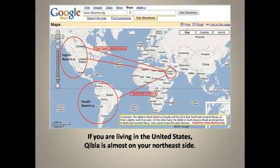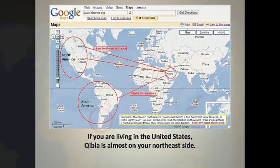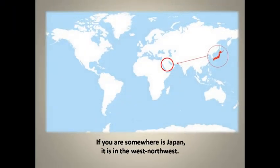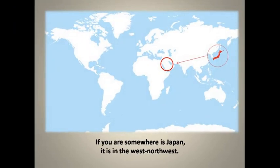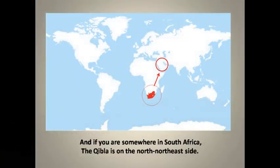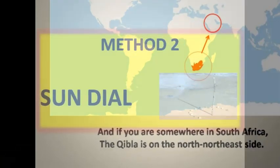If you are living in the United States, Qibla is almost on your northeast side. If you are somewhere in Japan, it is in the west-northwest. And if you are somewhere in South Africa, the Qibla is on the north-northeast side.